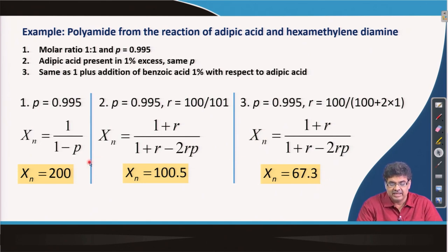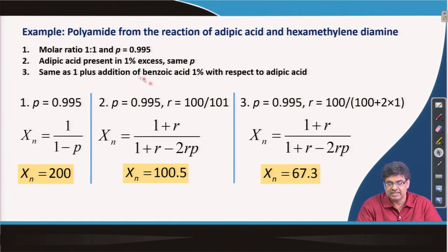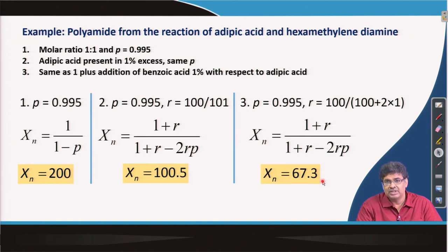You can see that adding just 1% monofunctional reactants — which act as chain stoppers — has more effect on reducing degree of polymerization than adding 1% excess of one of the difunctional monomers. Therefore, it is very important that your reaction mixture is devoid of any monofunctional monomers, and if you want to control molecular weight, you can use monofunctional monomers deliberately as chain stoppers.